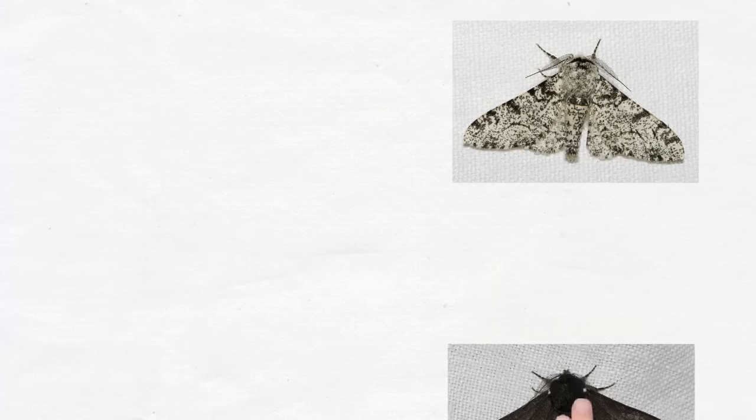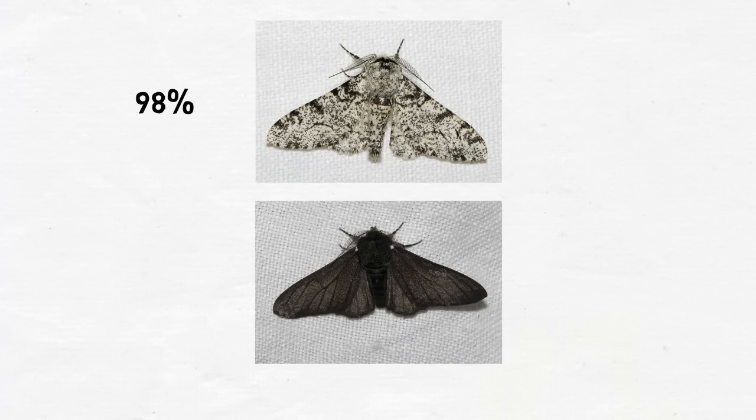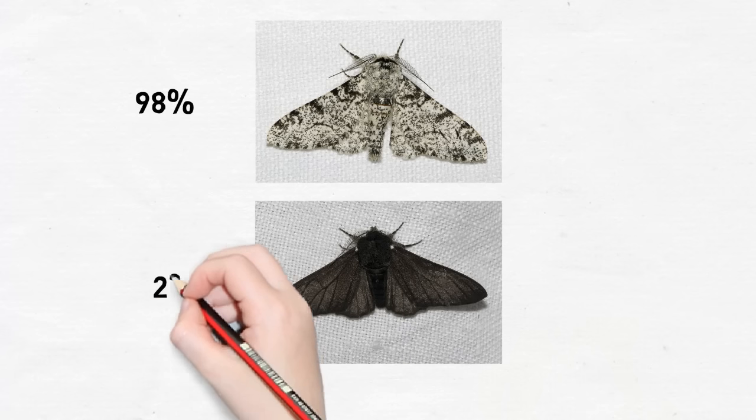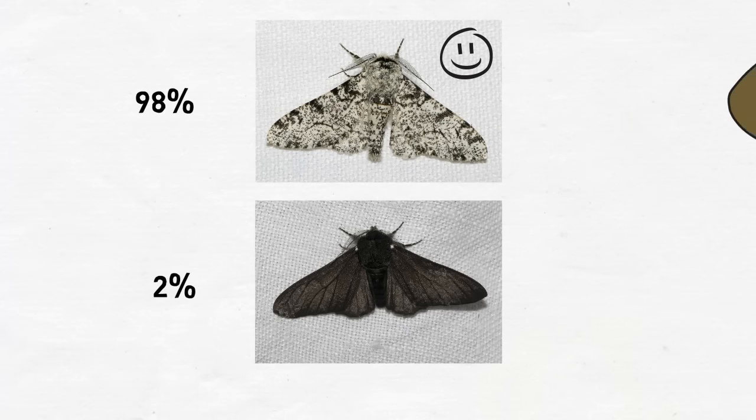Take the peppered moth. In London in the early 1800s, 98% of peppered moths had light-colored bodies. Only 2% were dark. The light moths were very happy because they were the same color as the trees, which meant that they could easily hide from hungry birds.